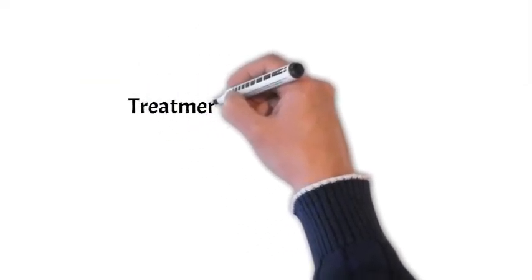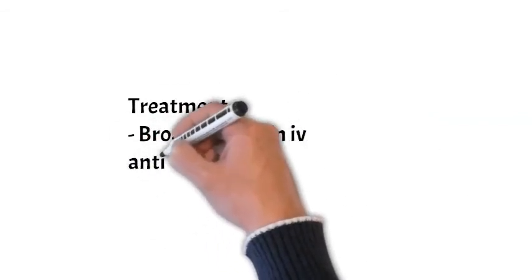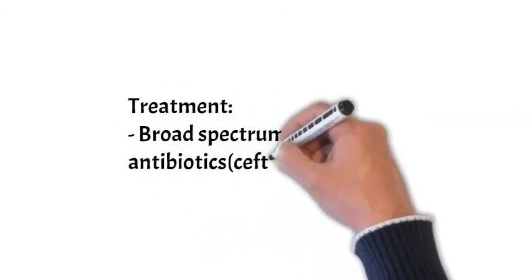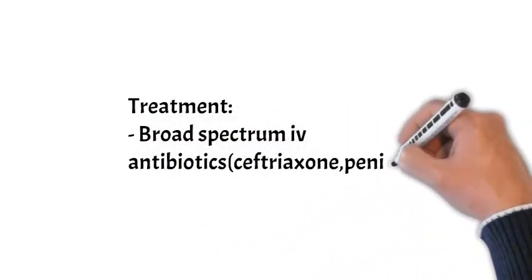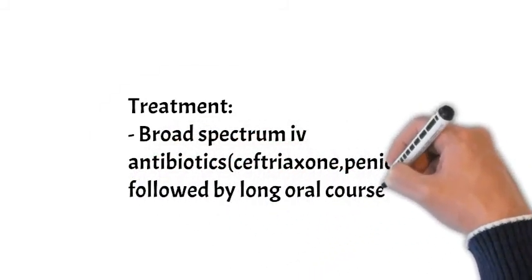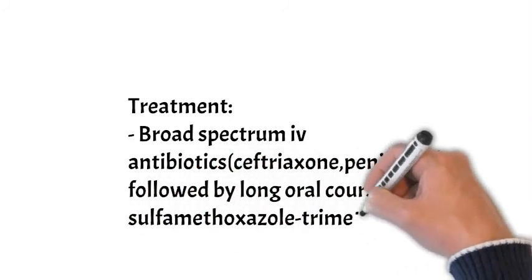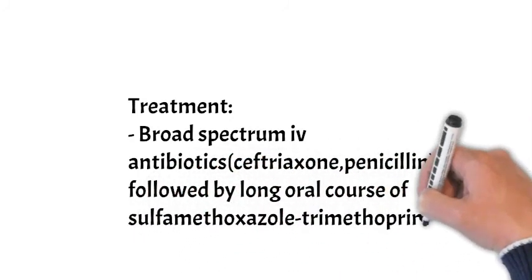The treatment includes broad spectrum IV antibiotics initially like ceftriaxone or penicillin, followed by a long oral course of various drugs like sulfamethoxazole and trimethoprim. So this is all in brief regarding Whipple's disease.